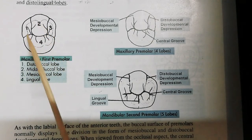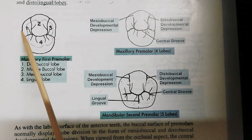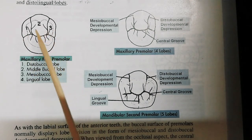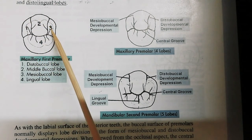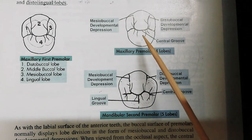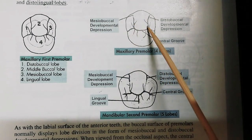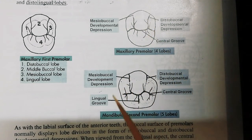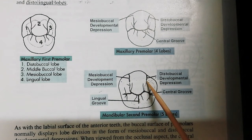In this diagram you can see the occlusal aspect of the maxillary first premolar. If this is the distal surface and this is the mesial surface, then this is the distobuccal lobe, this is the middle buccal lobe, this is the mesiobuccal lobe, and this is the lingual lobe. Here you can see the developmental depressions — this is the mesiobuccal developmental depression and this is the distobuccal developmental depression. Now let's come to the exception, which is the mandibular second premolar. This is the mesiobuccal developmental depression and this is the distobuccal developmental depression.